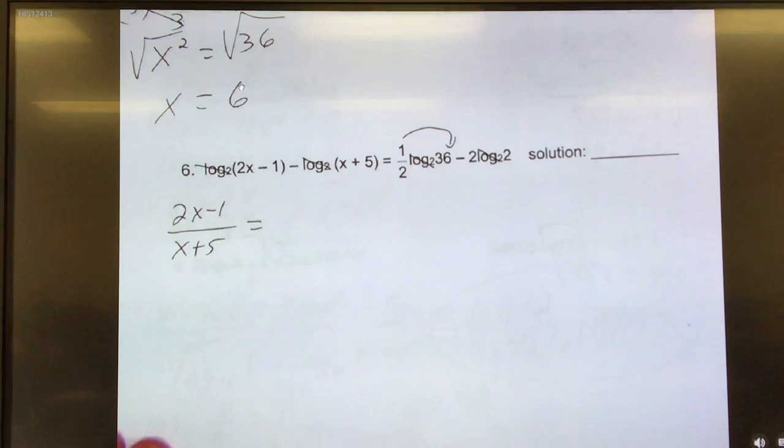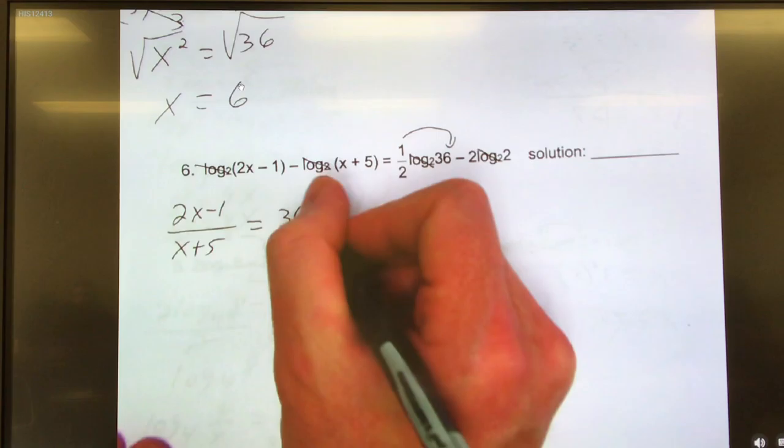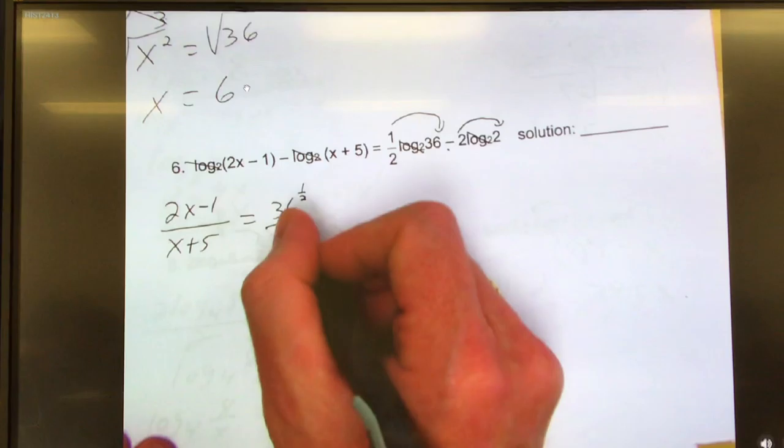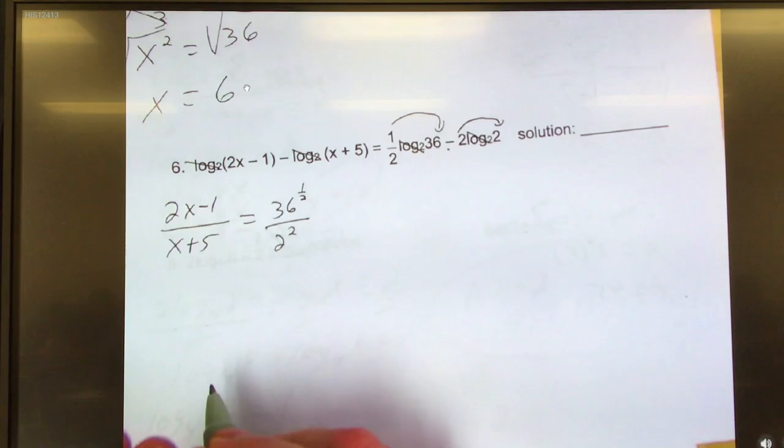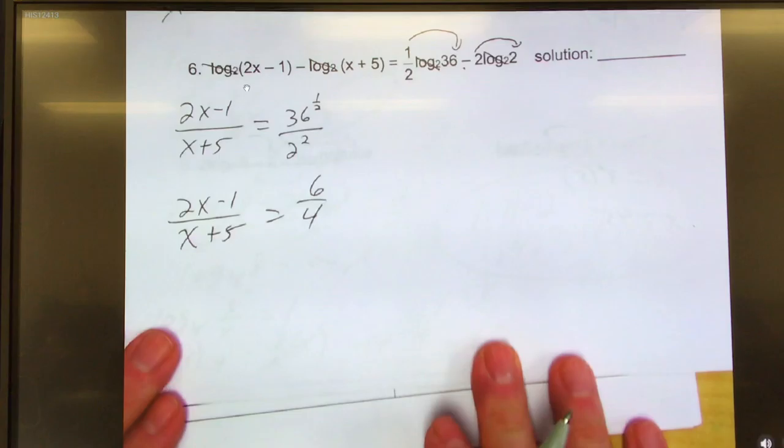And what is 36 to the 1 half power is the same thing as saying square root of 36. 1 half is square root. If you don't want to have to remember that, you could have did 36 to the 1 half power. Your calculator knows how to do that. And then subtract means divide. This 2 got to the front by being an exponent for that 2. So 2 squared. If I put this in my calculator, 36 to the 1 half power, it would give me 6.